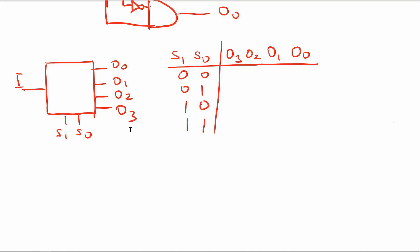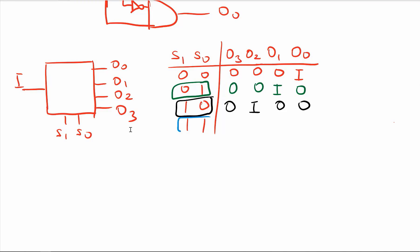If select lines are 0,0, input goes to output 0 and the rest are 0. If select lines are 0,1, input goes to output 1 and the rest are 0. If select lines are 1,0, input goes to output 2 and the rest are 0. If select lines are 1,1, input goes to output 3 and the rest are 0.